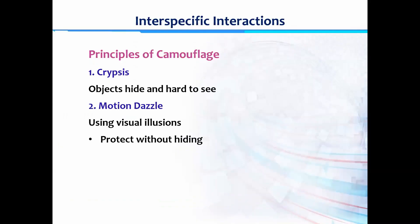In this video you have seen different examples of camouflage in different animals. There are different types and further classifications of camouflage techniques, and we will study only two in this lecture: one is crypsis and the second is motion dazzle. In crypsis, animals hide themselves — they don't move.